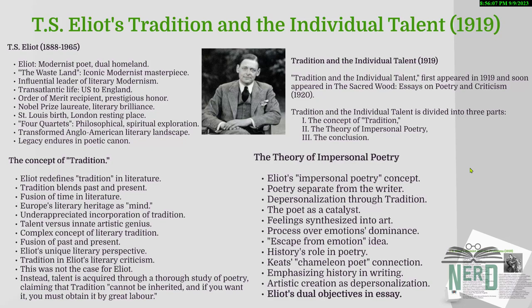Now let's talk about the theory of impersonal poetry. Eliot had this idea that poetry should be impersonal — separate from the poet's own personality. He thought that when poets create, they sort of give up a piece of themselves and tap into the big old tradition of poetry. It's almost like being a scientist mixing chemicals in a lab. In this case, the chemicals are feelings and emotions, and the poet's job is to mix them up and create a work of art that shows those feelings and emotions. But it's not about the raw feelings themselves — it's about the process of mixing them into something beautiful.